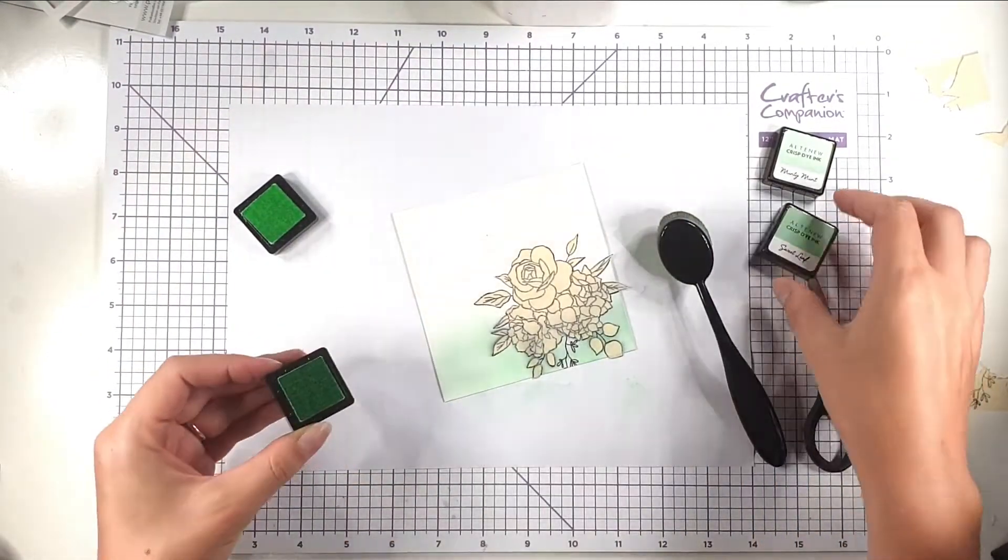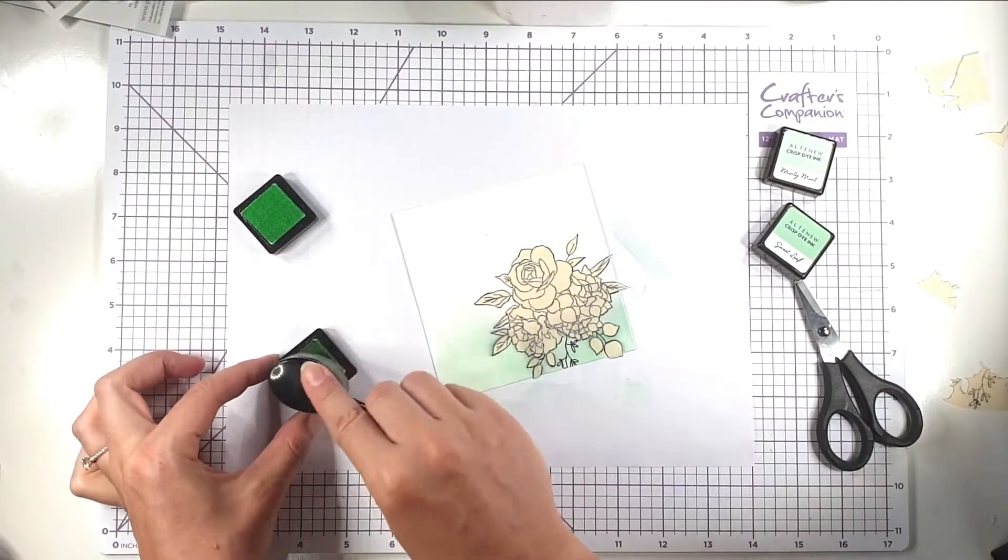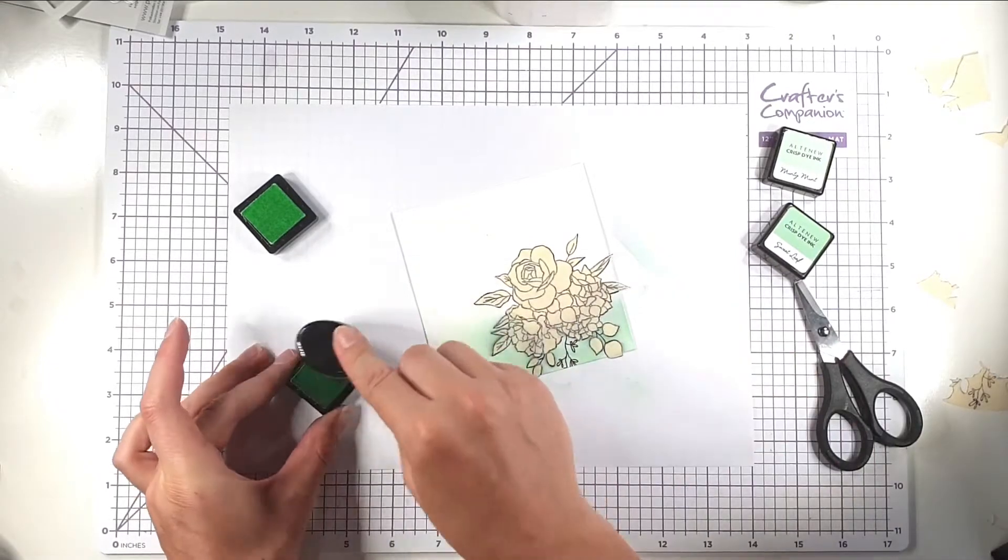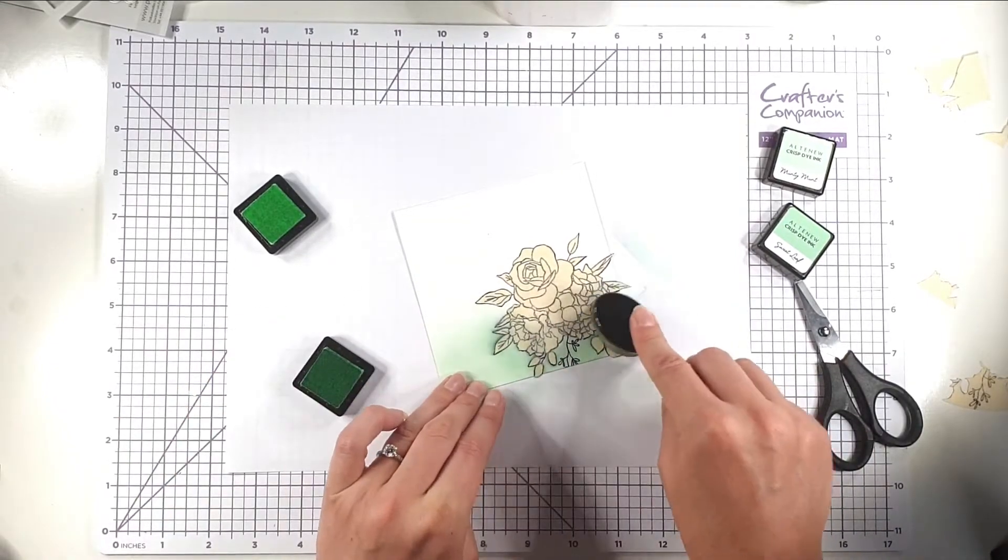And then I'm going to take a bit of this sweet leaf and I'm just going to blend that just around the actual flower, just so I've got a slightly darker colour just around the flower.